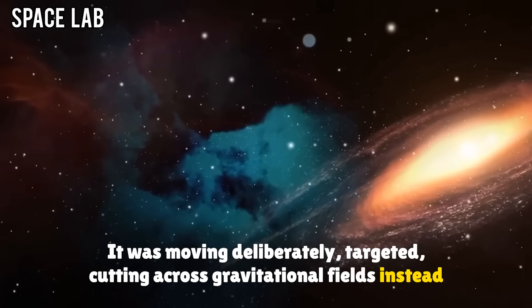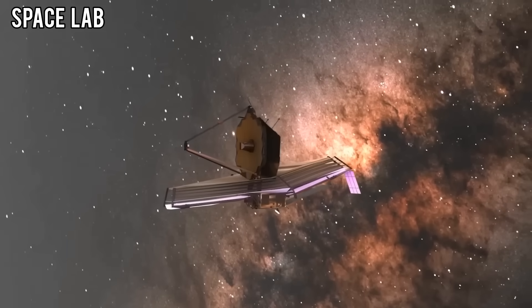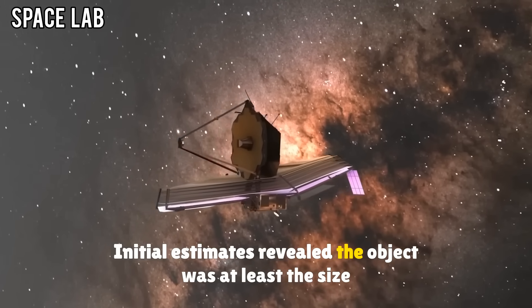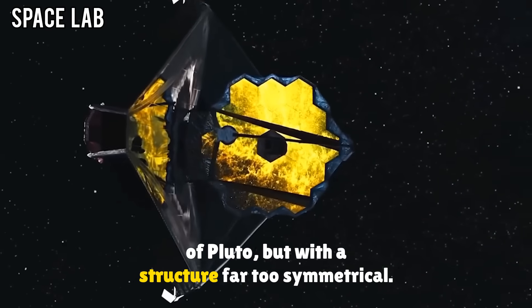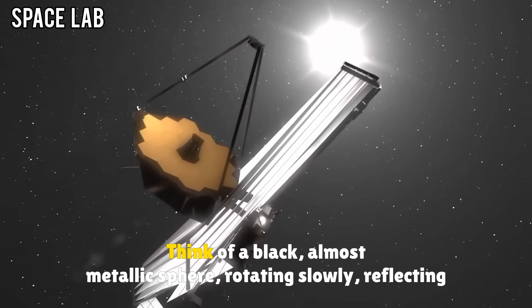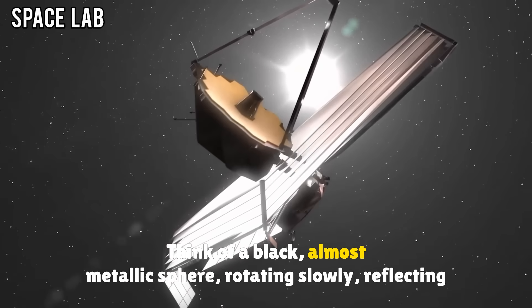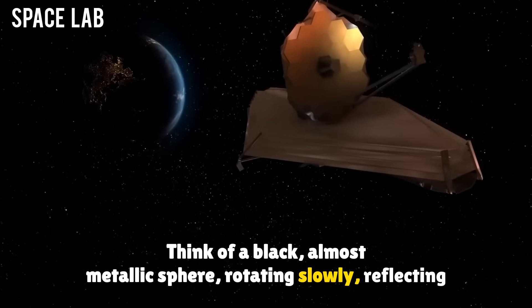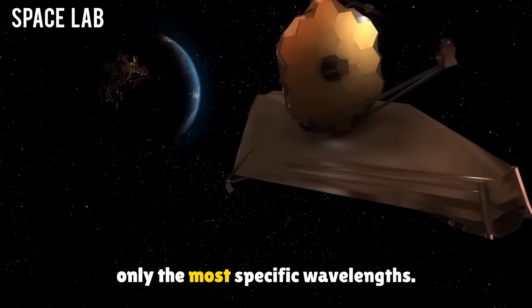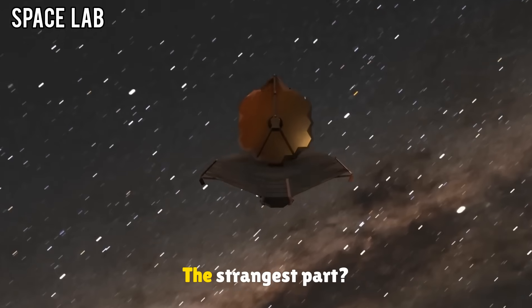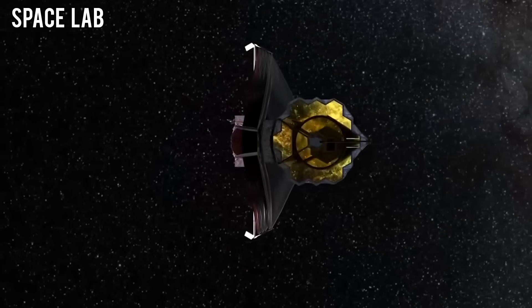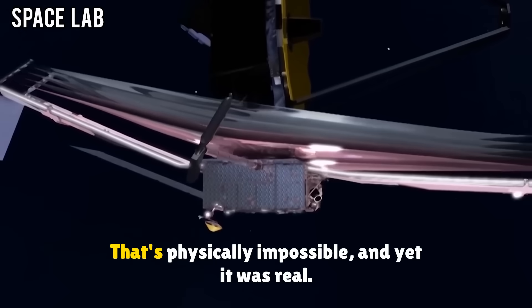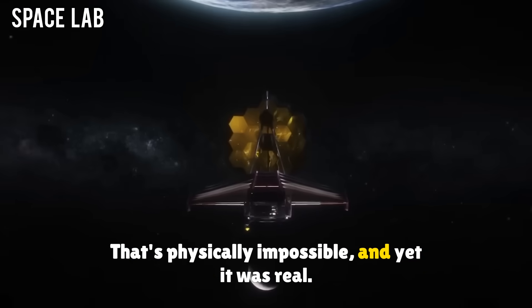Cutting across gravitational fields instead of being pulled by them. Initial estimates revealed the object was at least the size of Pluto, but with a structure far too symmetrical. Think of a black, almost metallic sphere, rotating slowly, reflecting only the most specific wavelengths. The strangest part? It was cold, dead cold, colder than space. That's physically impossible, and yet it was real.